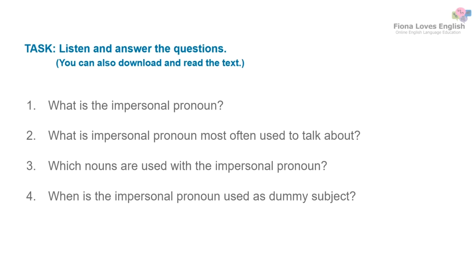Plural countable nouns use 'they.' English sentences nearly always need a subject. When there is no subject, 'it' is used in the place of the subject. We call this a dummy subject. This often happens when talking about the weather, the time, and also when giving our opinion on things and events.